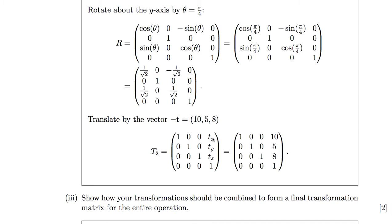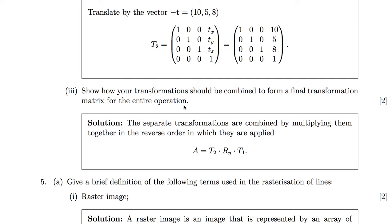Show how the transformations should be combined. We multiply them all together, but reading the multiplication from right to left is the order in which they're applied. In this case, the overall combined transformation is T2 times the rotation matrix times T1. Reading from right to left: we apply T1 first, then rotate, then apply T2. That's a key thing to remember.